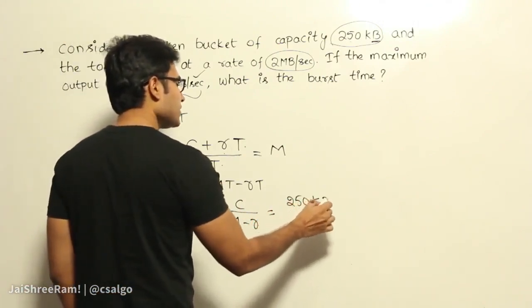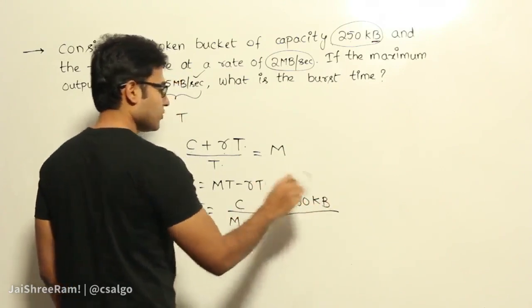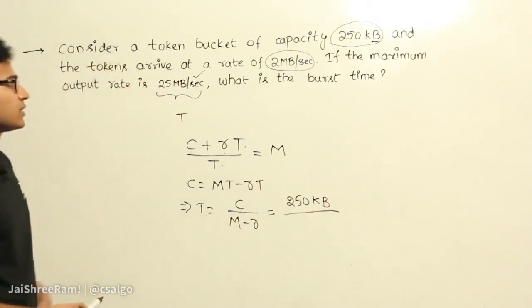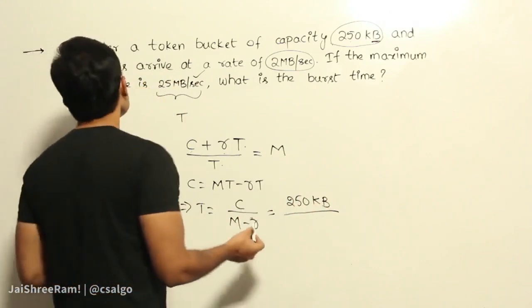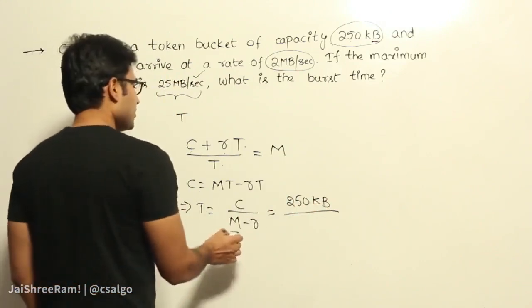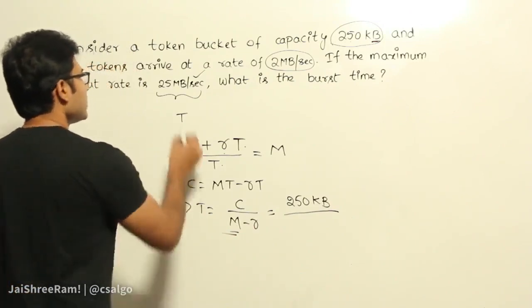If some of them are in packets and some of them are in bytes, you try to convert everything to the same units. So here everything is in bytes. So no problem. Now M minus R. So what is M? So M is the maximum rate.